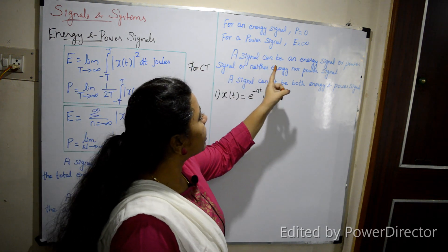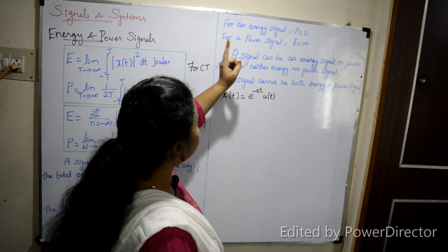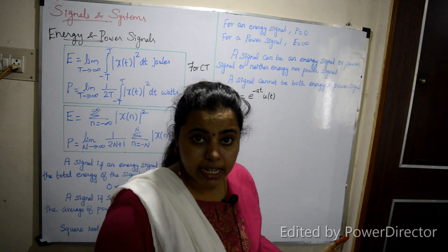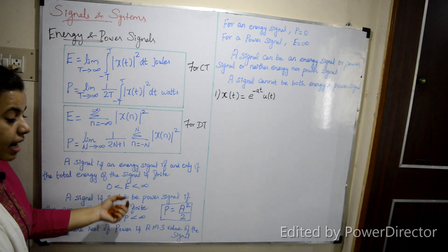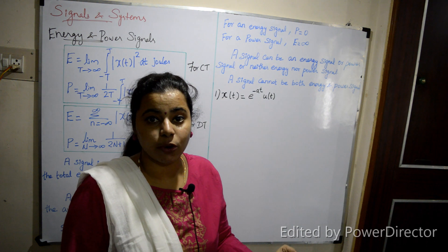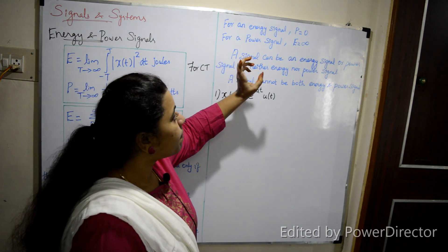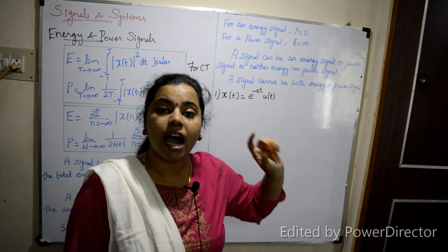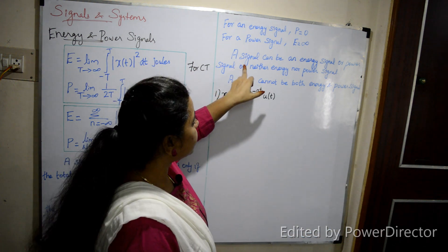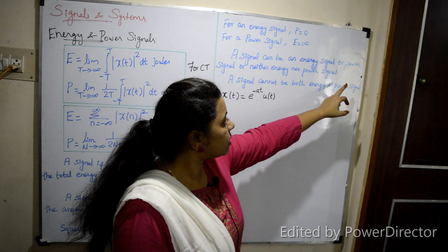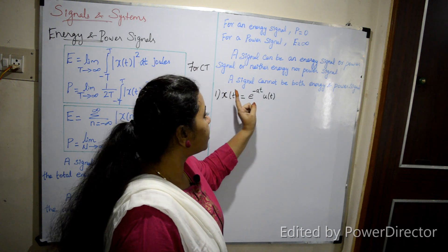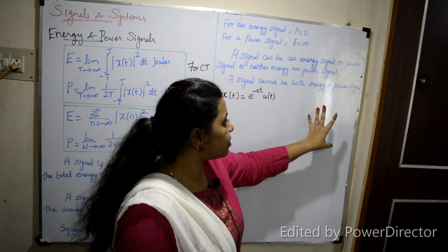Very important: for an energy signal, P = 0. And for a power signal, E = infinity. So if a signal is an energy signal, its average power is zero. If it is a power signal, its total energy is infinite. A signal can be an energy signal, a power signal, or neither energy nor power — but a signal cannot be both energy and power signal.